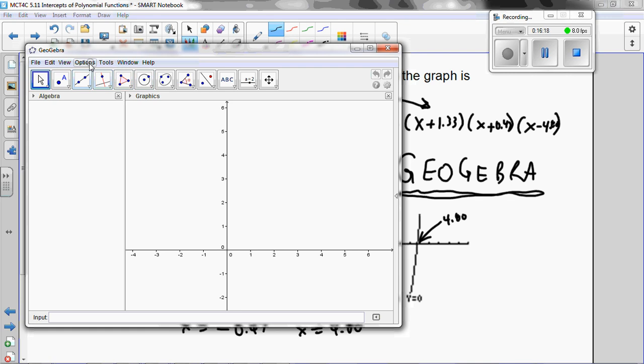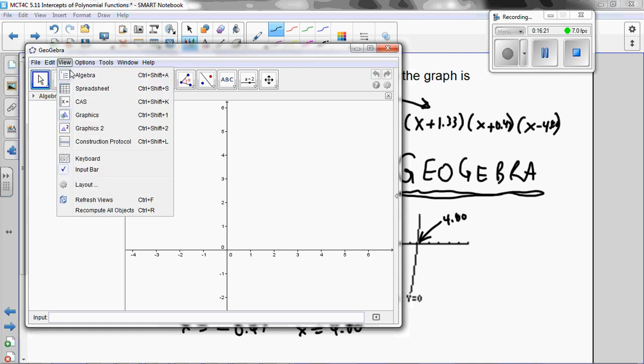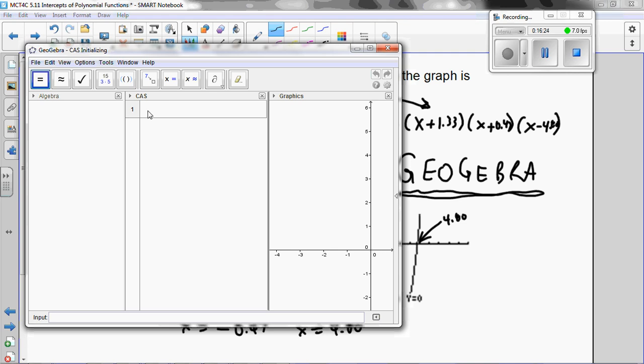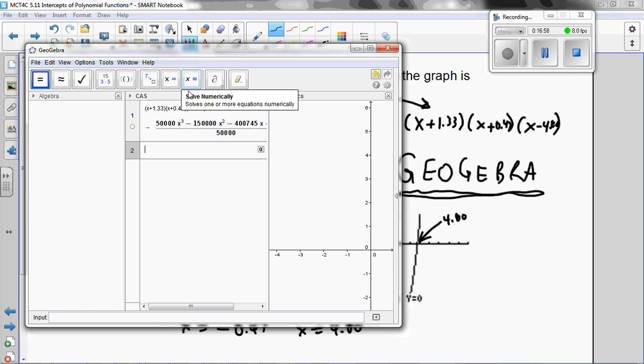But one thing that it can do is it can expand stuff really, really, really fast. So watch this. I've got to make it so I can put in statements. This is CAS, stands for Computer Algebra System. And if I wanted to, I could get it to expand this. What did that say? Plus 0.47. And then (x - 4.80). I press Enter. Well, that's a bit of a mess. But you know why? It's because it's calculated to all the decimal places. So why don't I ask it to evaluate this approximately?